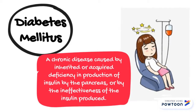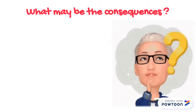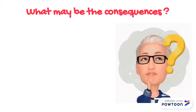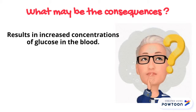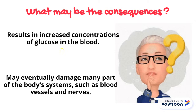To further into the glucose biosensor section, I will first talk about diabetes mellitus. It is a chronic disease caused by inherited or acquired deficiency in production of insulin by the pancreas, or by the ineffectiveness of the insulin produced. The patient may result in increased concentrations of glucose in the blood, which may eventually damage many parts of the body systems such as blood vessels and nerves.